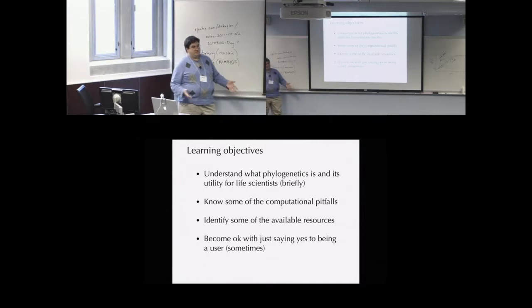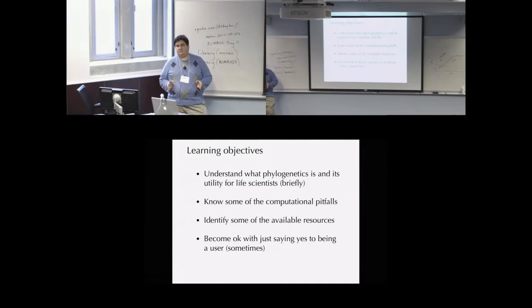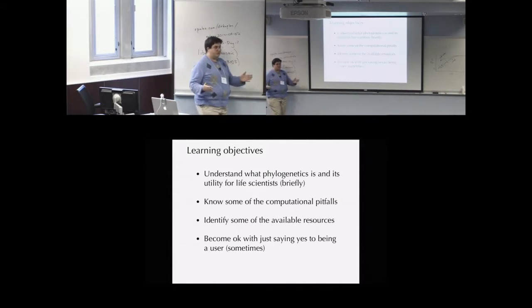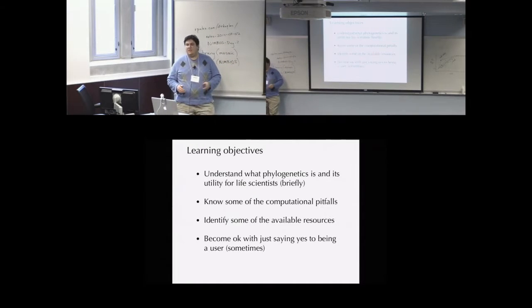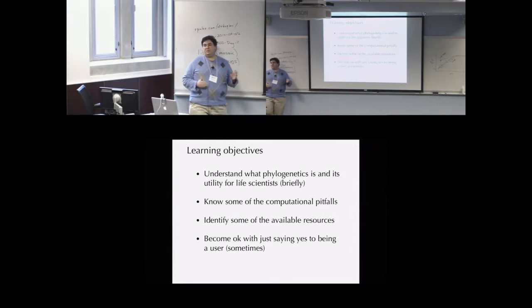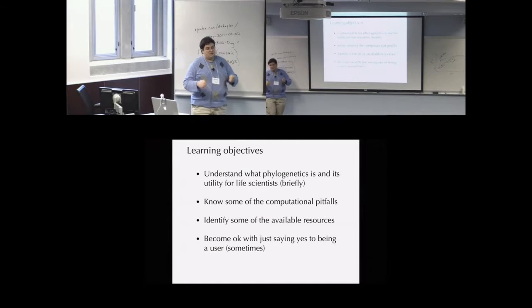Our learning objectives for this section: briefly understand what phylogenetics is and its utility for life scientists. We're all life scientists — we study life, and life's related by a tree. We need to get that tree for lots of things, so we'll talk about why it's cool and interesting.